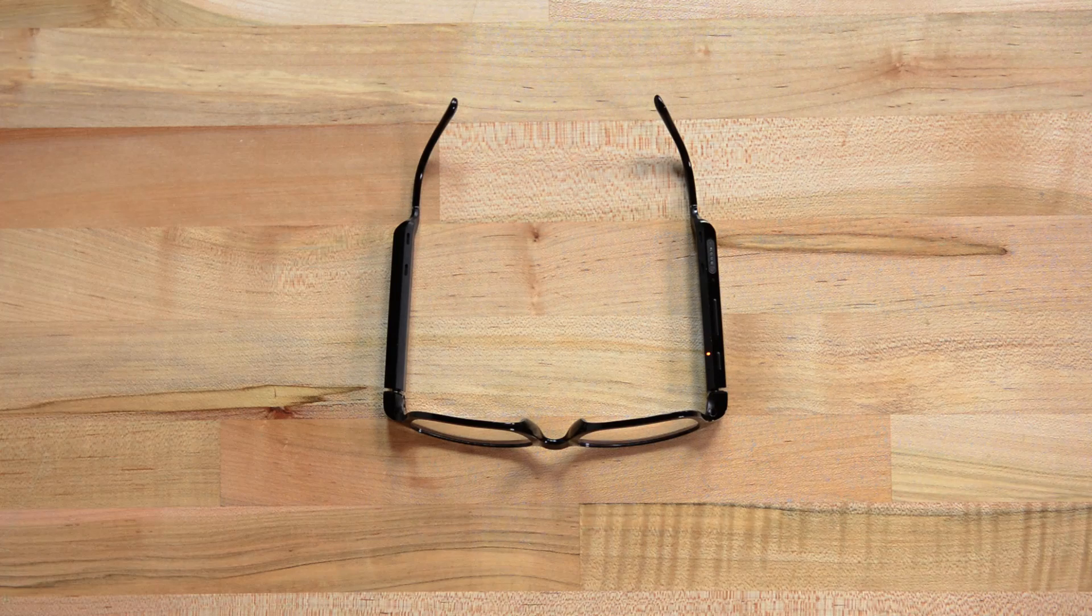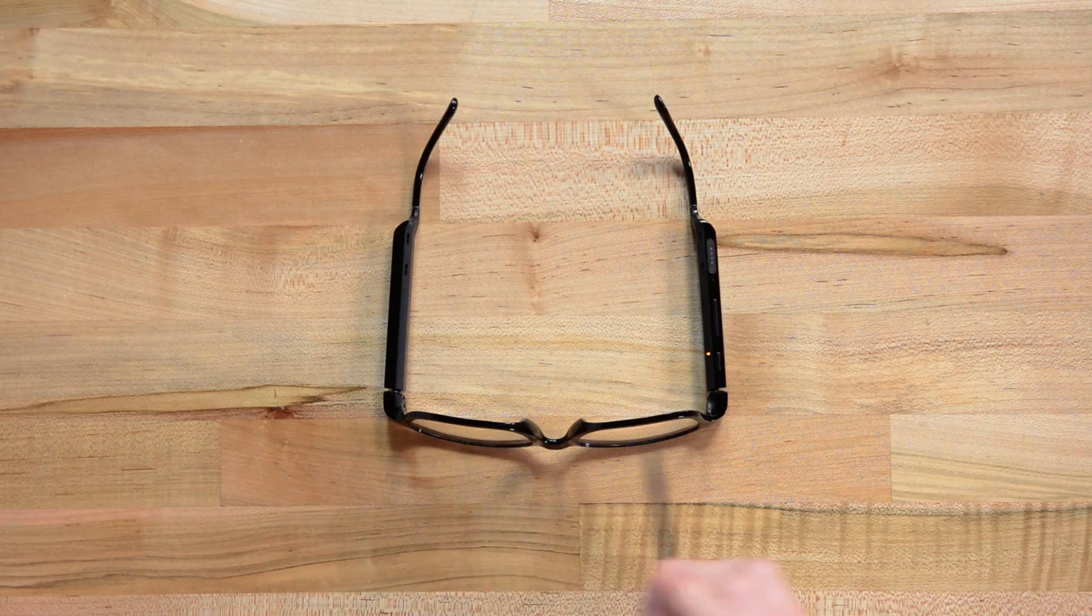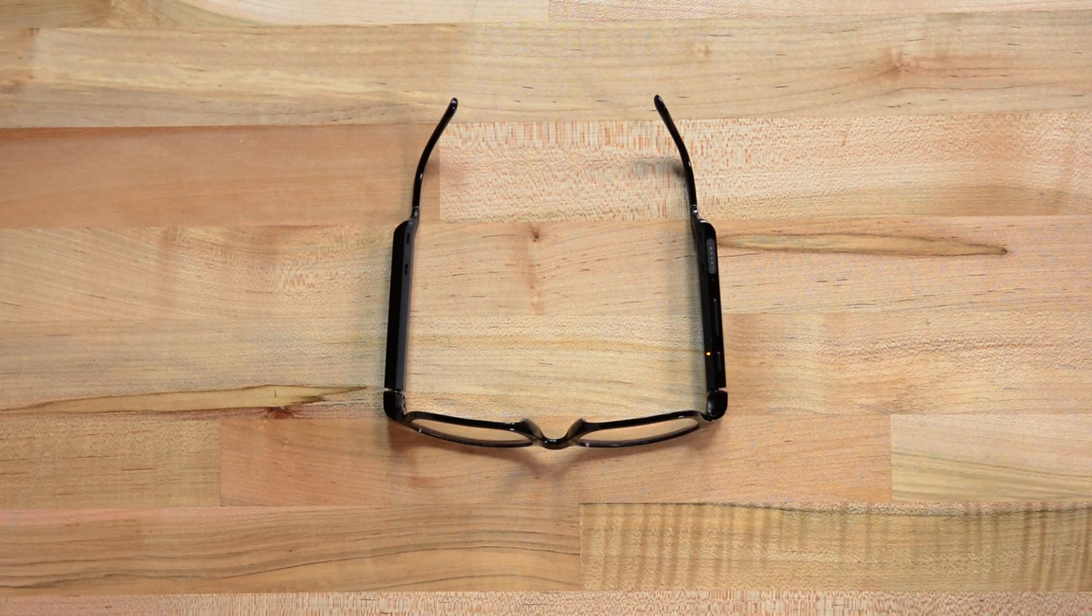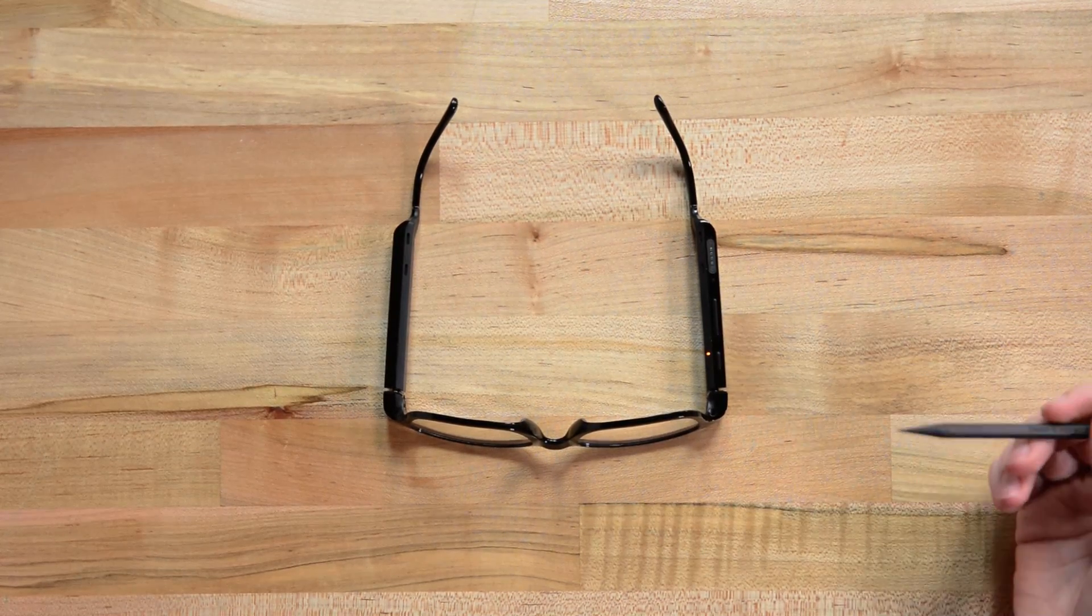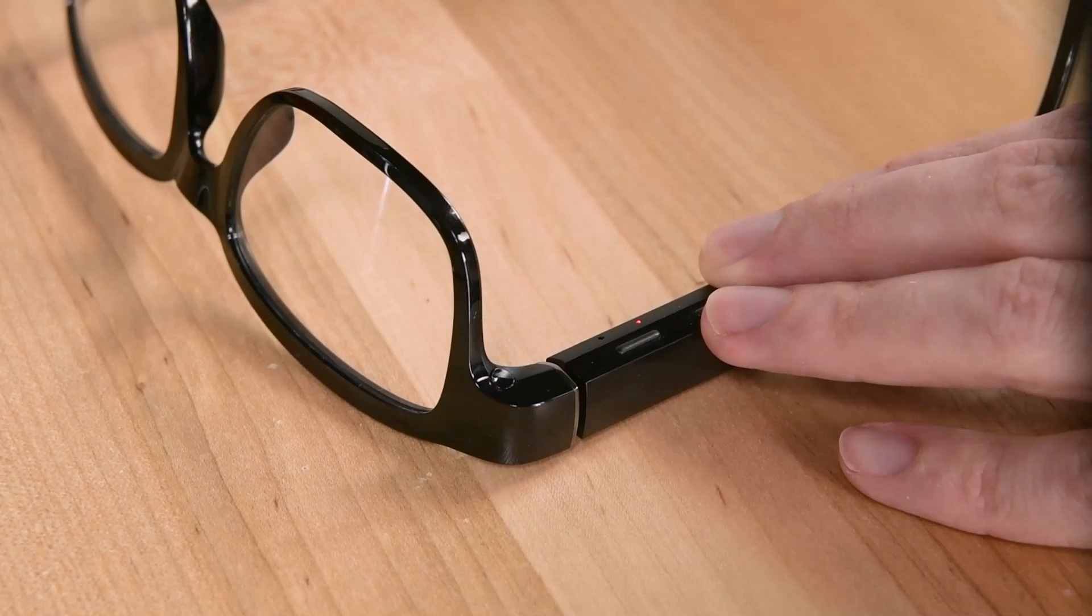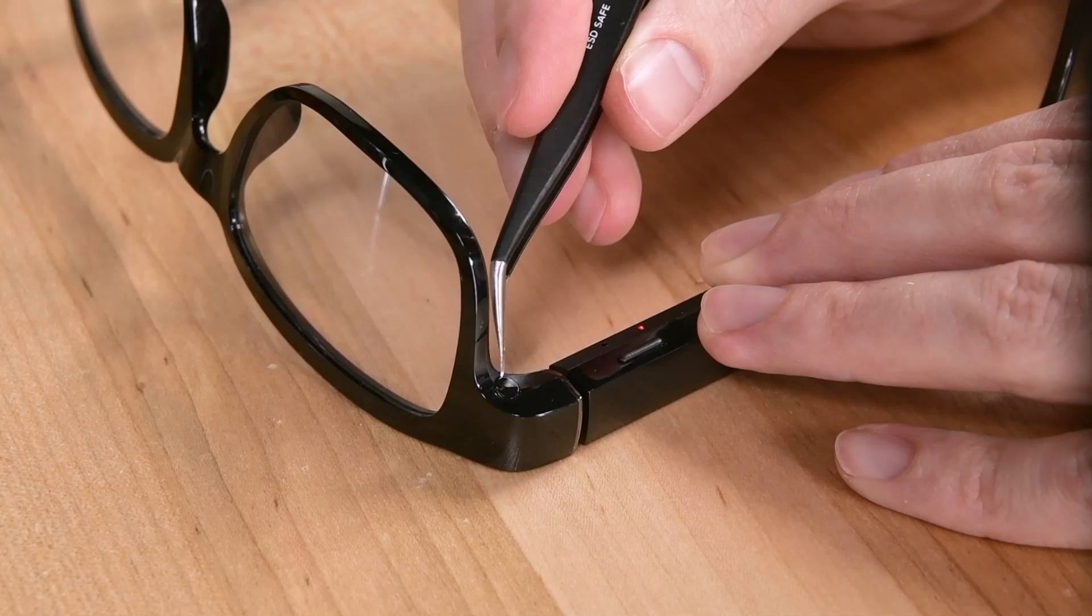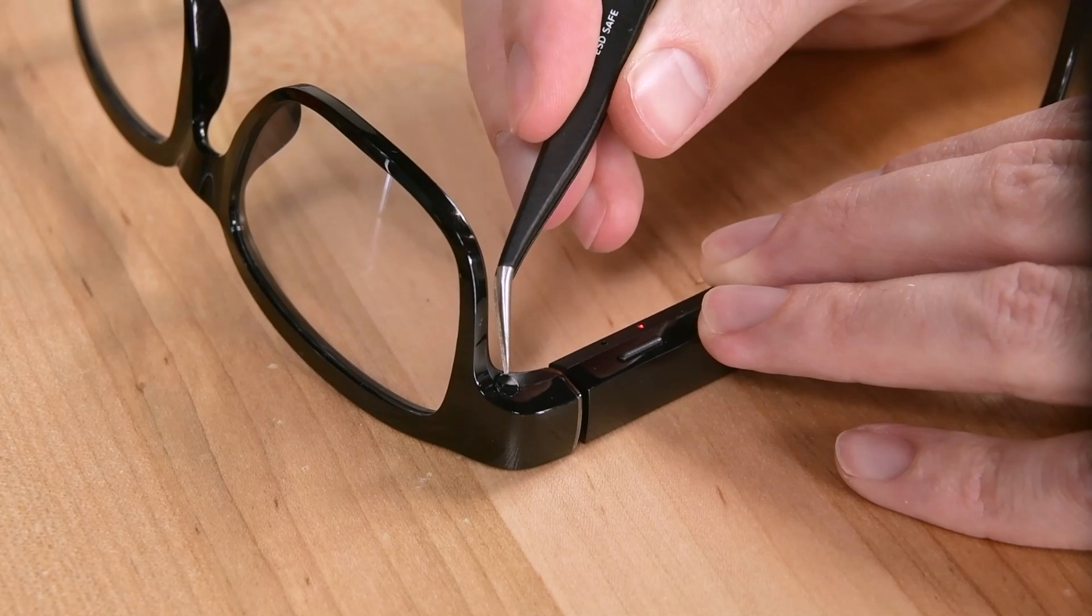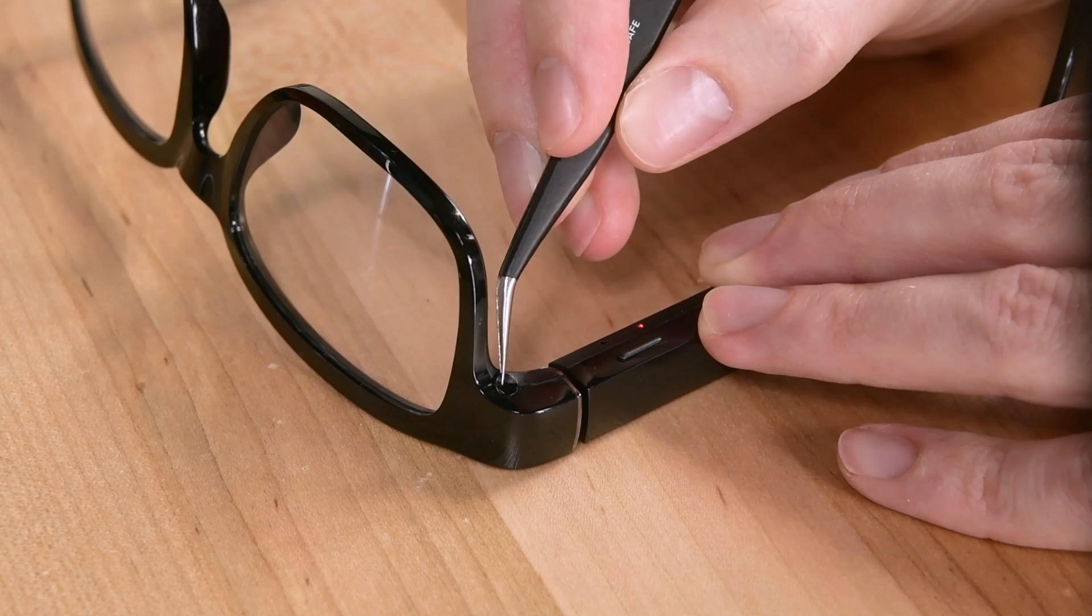If these are anything like normal glasses, I'm guessing that there will be screws here close to the lens on either side that will hold the arms in place. And if we can get rid of those, we can detach the arms, and that will make our lives a lot easier. Don't want to be too destructive here. It looks like it's coming up a little bit. So these little panels are just adhered in place, it looks like.